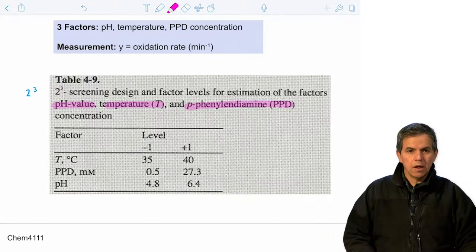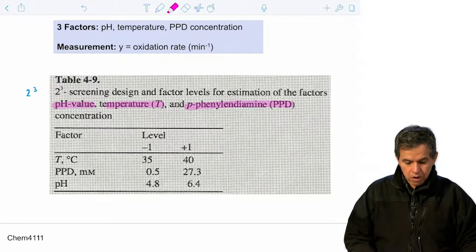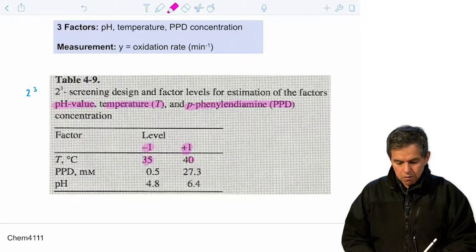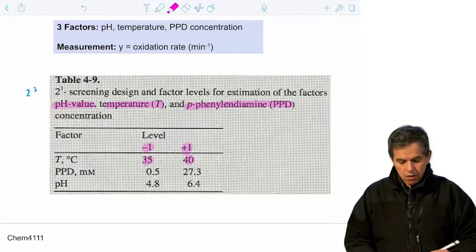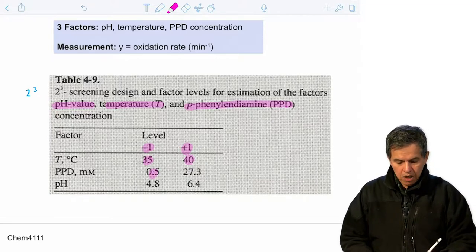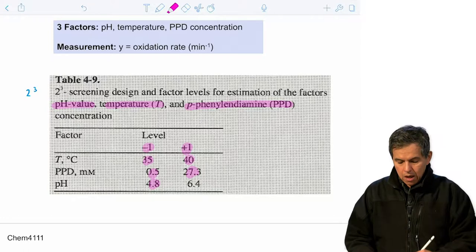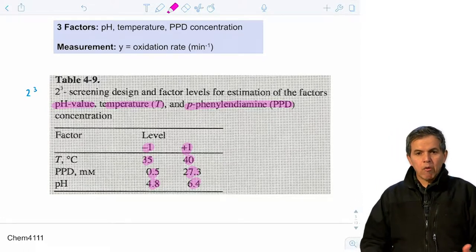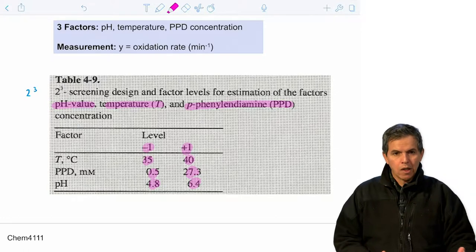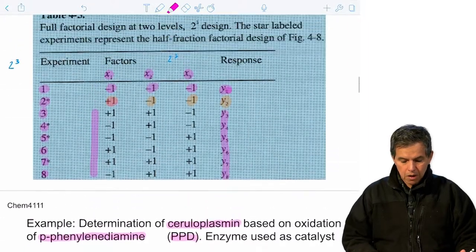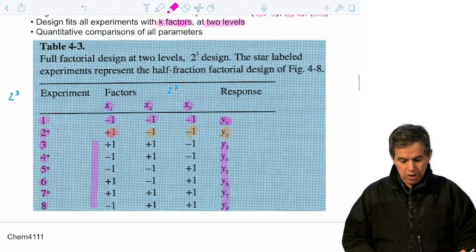Since it is a 2 to the third design with three factors, we need to have a low level and a high level for each. Temperature will be 35°C as low and 40°C as high. PPD concentration will be 0.5 millimolar as low and 27.3 millimolar as high. pH will be 4.8 as low and 6.4 as high. We then use these low and high levels and use the predefined table as a guide to conduct the multiple measurements.